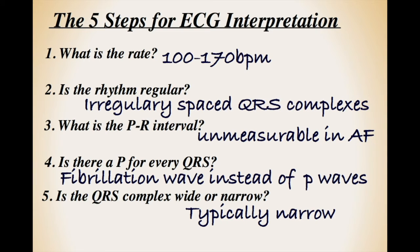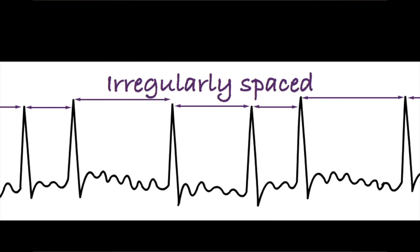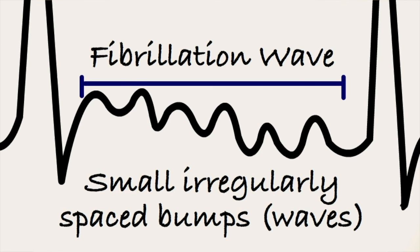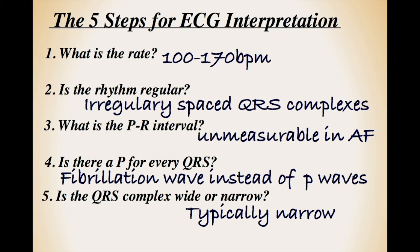In summary, we know this ECG represents AF, as it shows irregularly spaced QRS complexes representing irregular ventricle contractions, and because there were fibrillation waves rather than distinct P-waves, representing the rapid and irregular conduction of the atria. Congratulations, you can now identify AF on an ECG.